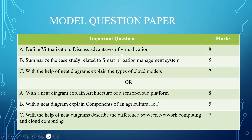Define virtualization and discuss the advantages of virtualization — totally 8 marks. Summarize the case study related to smart irrigation management system, which covers 5 marks. With a neat diagram, explain the types of cloud models — 7 marks. The OR choice: with a neat diagram, explain the architecture of sensor cloud platform — 8 marks — and with a neat diagram, explain components of an agriculture IoT — 5 marks. With a neat diagram, describe the difference between network computing and cloud computing — 7 marks.